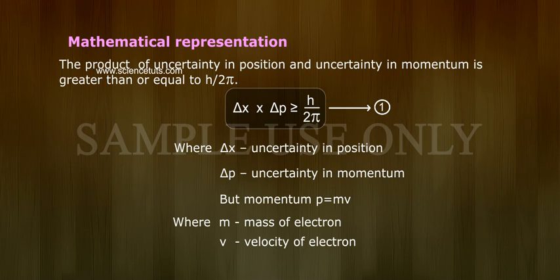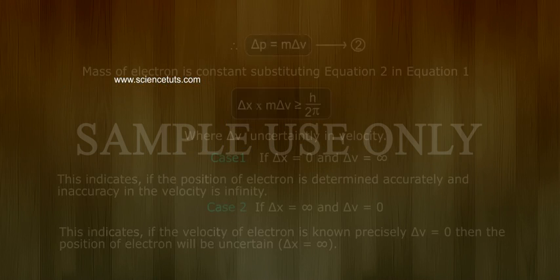Where Δx = uncertainty in position, Δp = uncertainty in momentum. But momentum p = mv, where m = mass of electron, v = velocity of electron. Therefore,